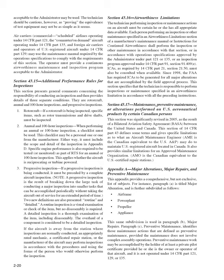Appendix A, Major Alterations, Major Repairs, and Preventive Maintenance. This appendix provides a comprehensive but not exclusive list. Paragraph A is titled Major Alteration, subdivided into airframe, powerplant, propeller, and appliance. The same subdivision is used in Paragraph B, Major Repairs. Paragraph C, Preventive Maintenance, identifies those maintenance actions defined as preventive maintenance, provided the maintenance does not involve complex assembly operations. Preventive maintenance may be accomplished by the holder of at least a private pilot certificate, provided he or she is the owner or operator of that aircraft and it is not operated under 14 CFR Parts 121, 129, or 135.